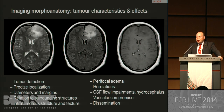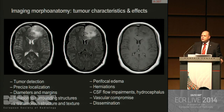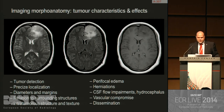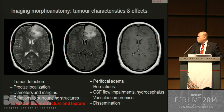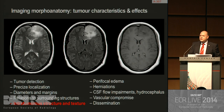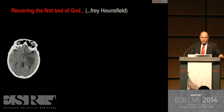It's a very important issue — internal architecture and texture — and, of course, to observe perifocal edema, herniations, potential obstructions of CSF pathways, vascular compromising, and dissemination of a tumor. I would like to stress this point of internal architecture and texture, because it leads us to another important area.